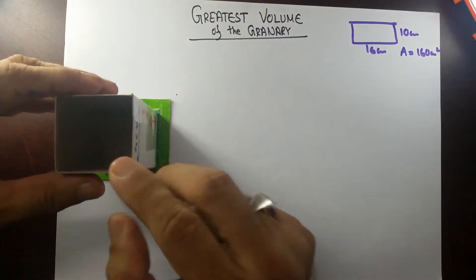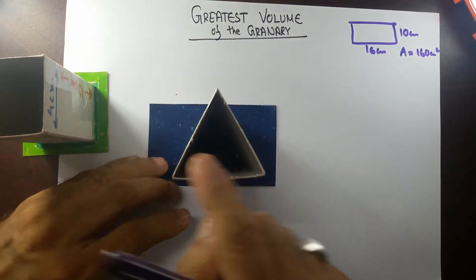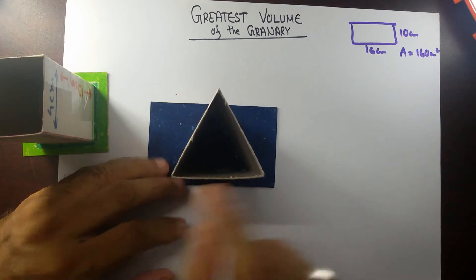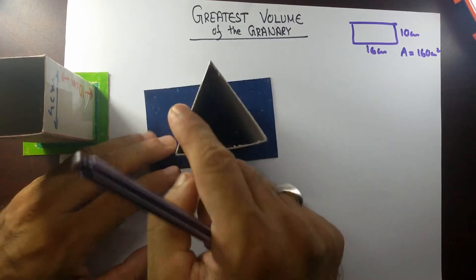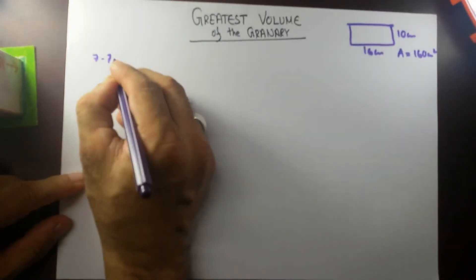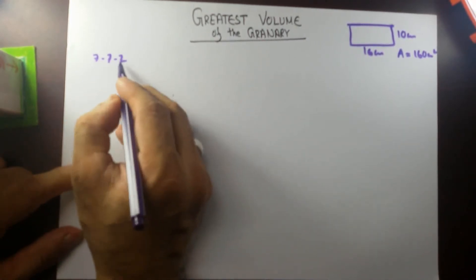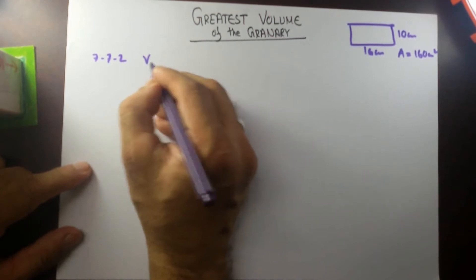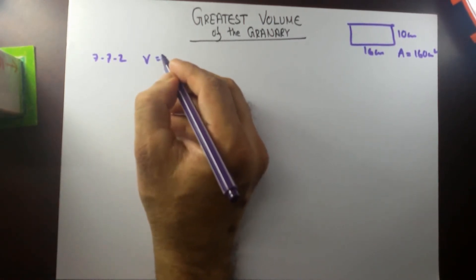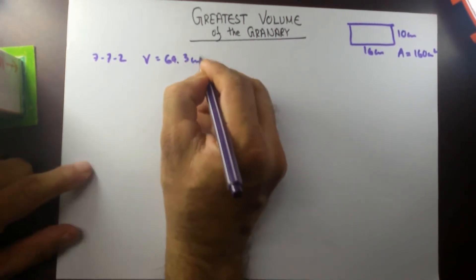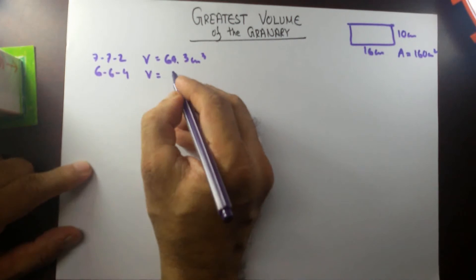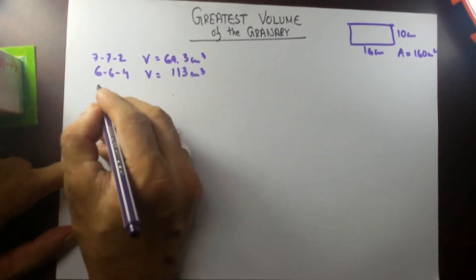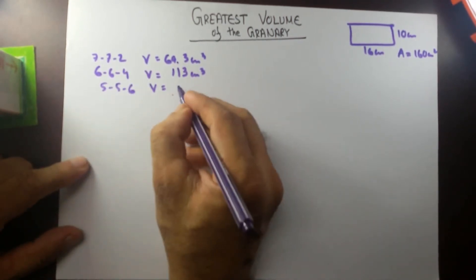Now instead of a square base prism, if we use a triangular base prism, the same concept applies — when you have all sides equal. I gave you an assignment in the last video: if you have different triangles, for example sides 7, 7, and 2 cm, the volume of that prism is 69.3 cubic cm. If you use sides 6, 6, and 4, the volume is 113 cubic cm. If you use 5, 5, and 6, the volume is 120 cubic cm.